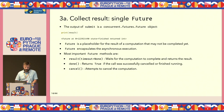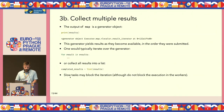We can ask the Future object whether it's done, and we can also request to cancel that execution. When collecting multiple results using map, we iterate over the results and the generator returns results one by one as they become available. There's a shortcoming though: if we start with a slow task, it may block the faster ones that come after it, so map may not be optimal unless you want all results at once anyway.